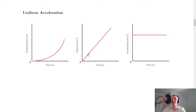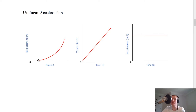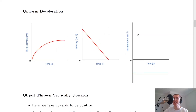Looking at uniform acceleration: the velocity-time graph shows a positively sloping straight line. Because it's a constant acceleration, the acceleration-time graph will have a straight horizontal line — just like the velocity-time graph does for constant velocity. For the displacement-time graph we get a curve upward, because as the object speeds up it covers more displacement in a set time.